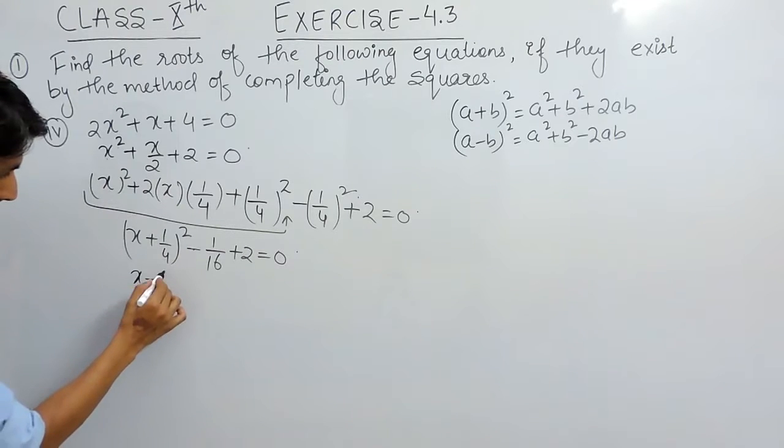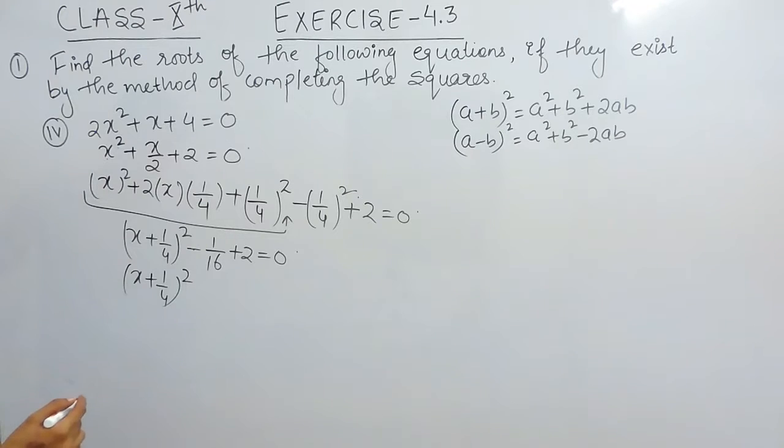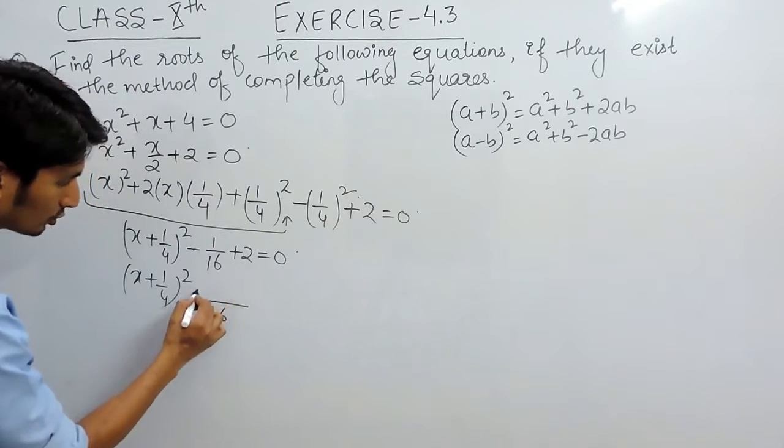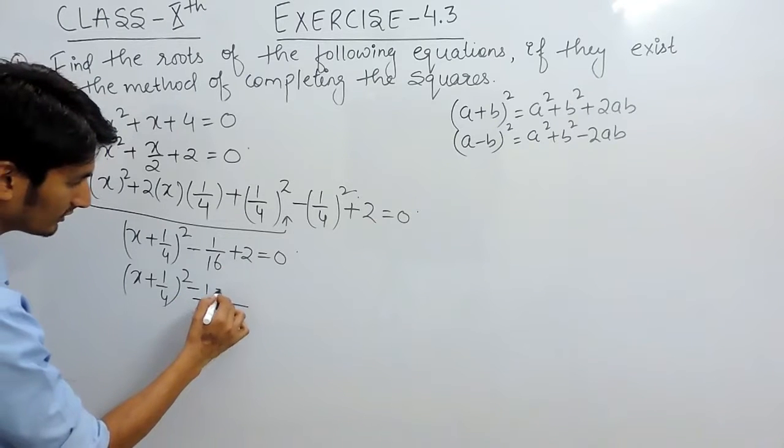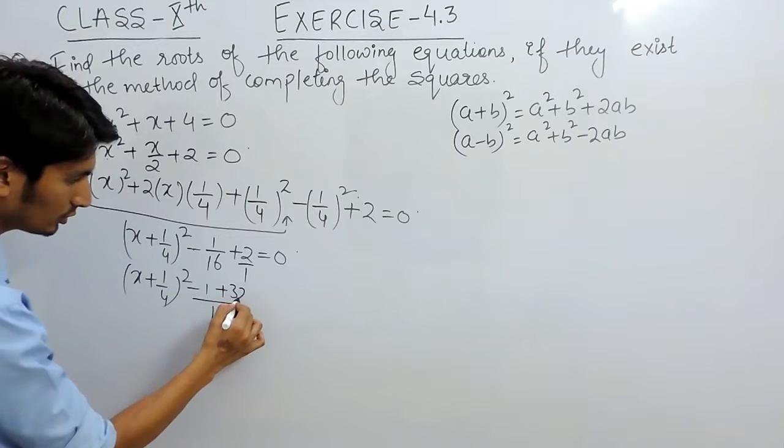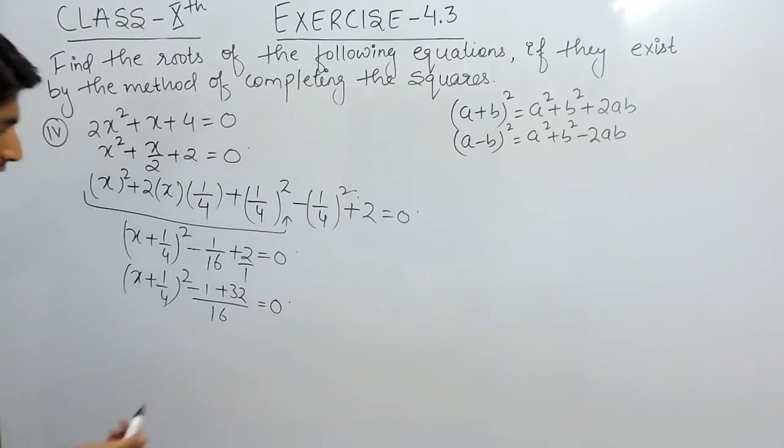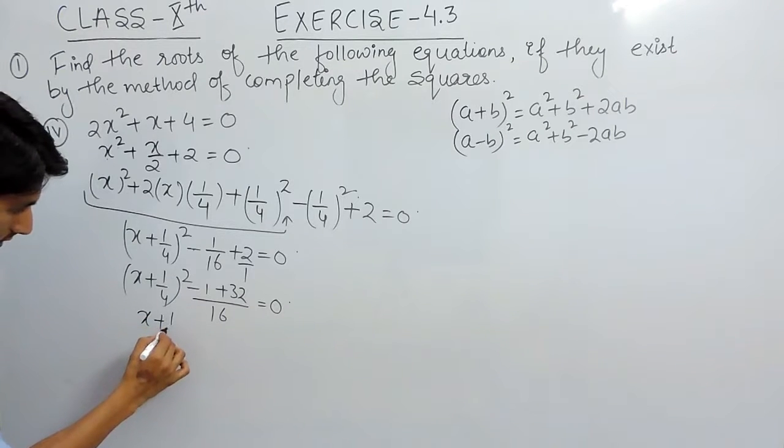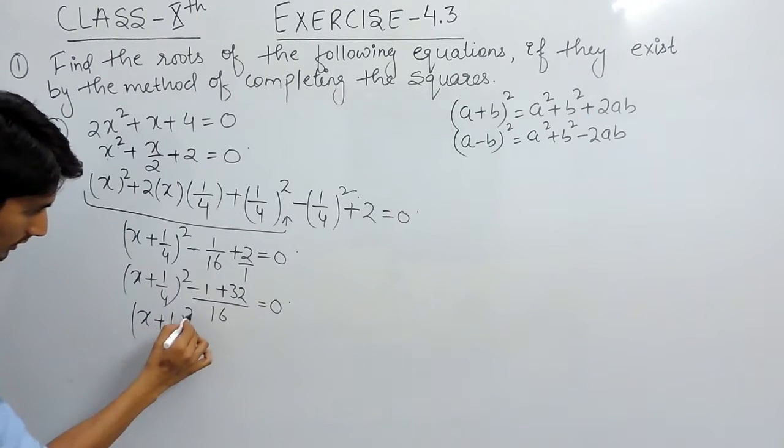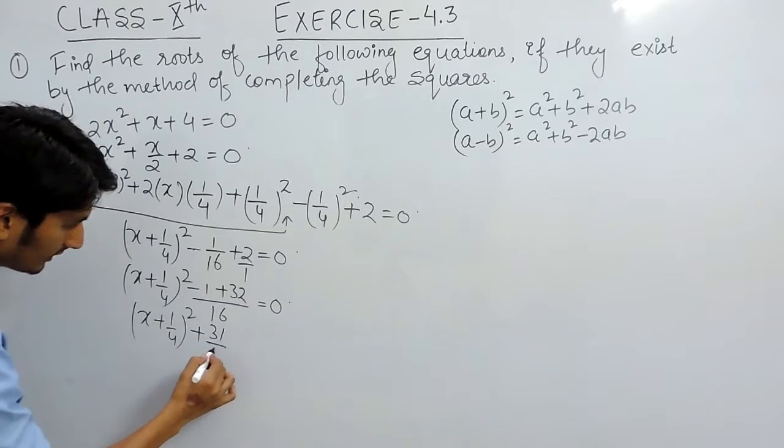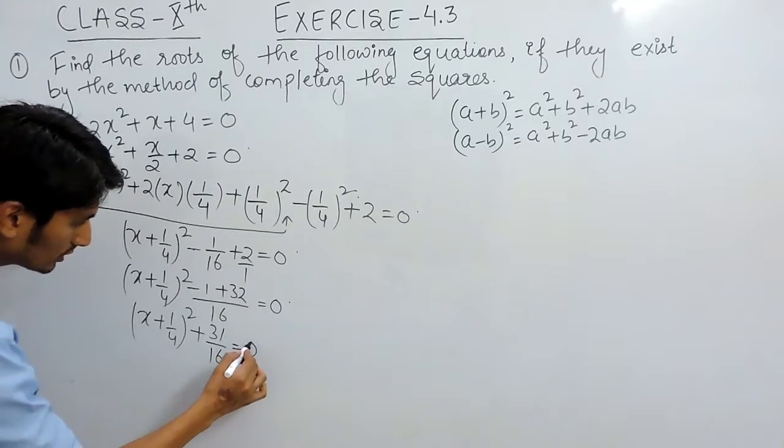So we can write x plus 1 upon 4 whole square. So taking 16 as LCM so this will be minus 1. This will be 16 to 32 equals to 0. So further solving it 32 minus 1 is basically 31 upon 16 equals to 0.